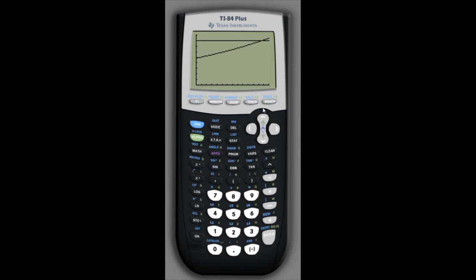But we can find this more precisely if we look under the calc menu. Hit second, trace, and the intersect option is number 5. And since there's only one intersection, we don't have to worry too much about moving this close to the intersection point to begin with. But we will anyway, just to be consistent. We'll get close to it, and then hit enter three times.